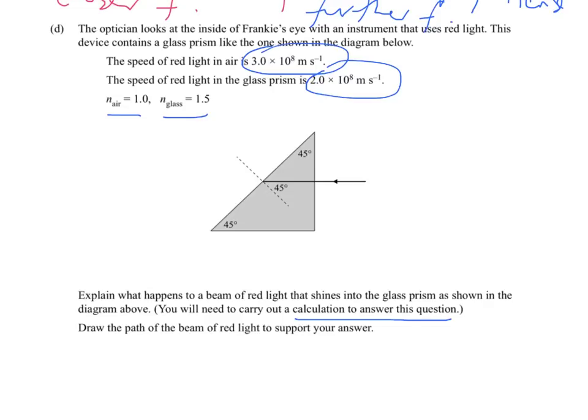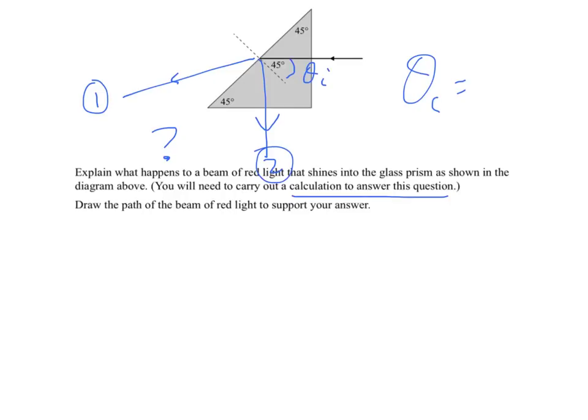So what we would expect with a question sort of like this with prisms is thinking about total internal reflection. And we need to know whether we're going to get nice refraction away from the normal or whether we're going to get total internal reflection. So it could be either one or two. We're not sure which. So we have to do the calculation to find out. The calculation we're going to have to find out because we know the angle of incidence. We have to find out what the critical angle is between the prism and the air.